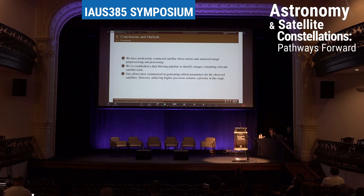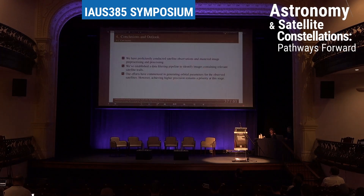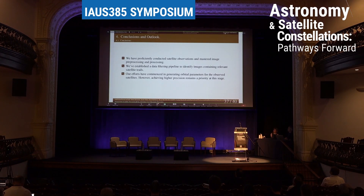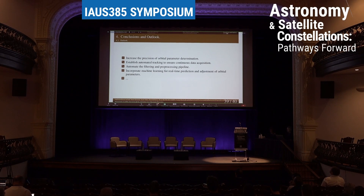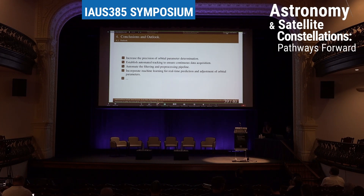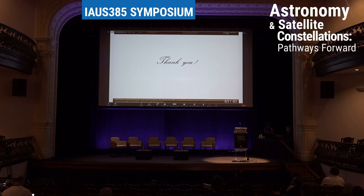In conclusion, we have professionally conducted satellite observations and mastered image processing and pre-processing. We have established a filtering pipeline to identify images containing relevant satellite streaks. Our efforts have commenced in generating orbital parameters for observed satellites, though achieving higher precision remains a priority. In the outlook, we aim to increase the precision of orbital parameter determination, establish automated tracking for continuous data acquisition, automate the filtering and processing pipeline, and incorporate machine learning for real-time prediction and adjustment of orbital parameters. Thank you very much.